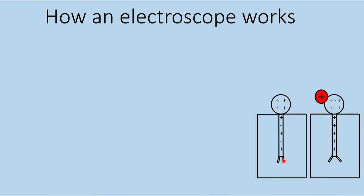Another case: we already have a positively charged electroscope and we bring a positively charged object. A positively charged electroscope doesn't mean it has no electrons — it means the number of positive charges exceeds the number of negative charges. When the positive object is placed in contact, it pulls the remaining electrons in the rod and leaflets upward, increasing the magnitude of positive charge on the leaflets, causing stronger repulsion. This is how we measure the strength of the charge.